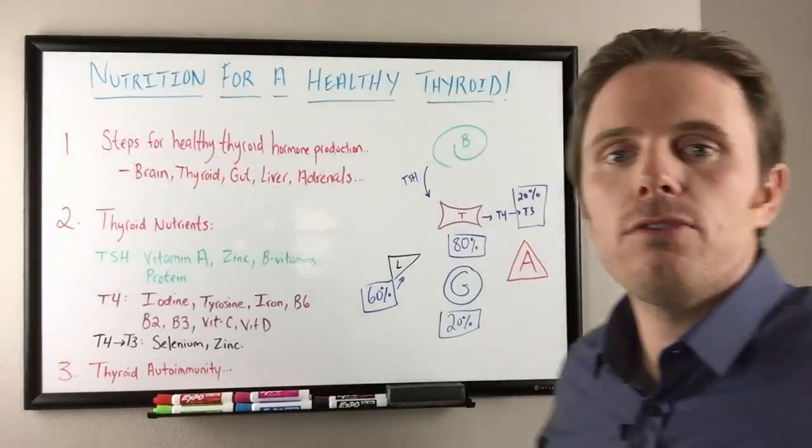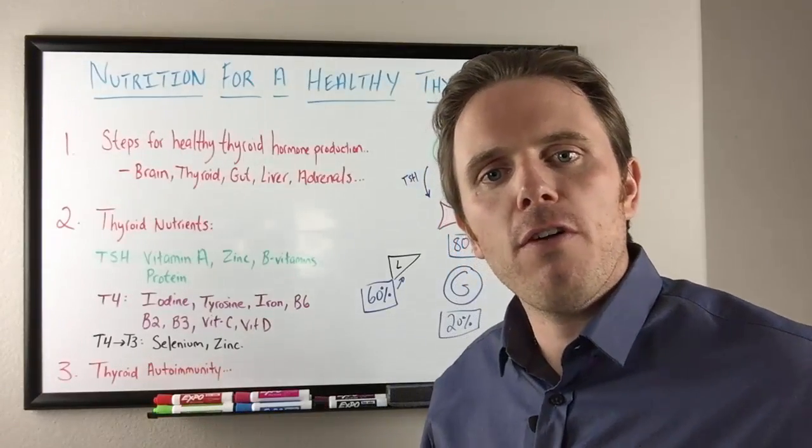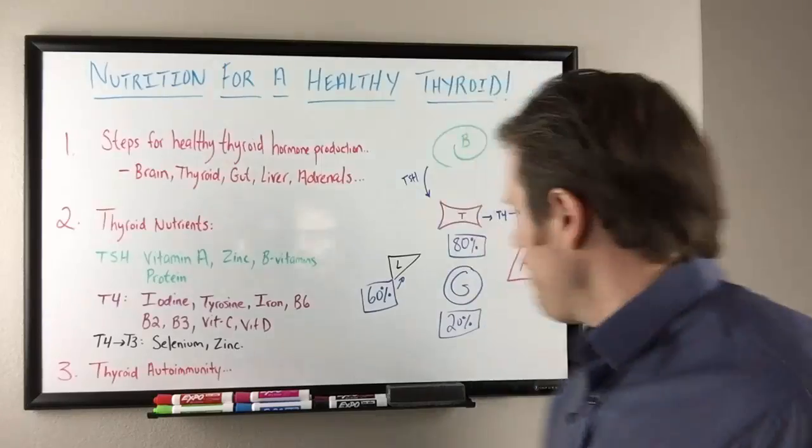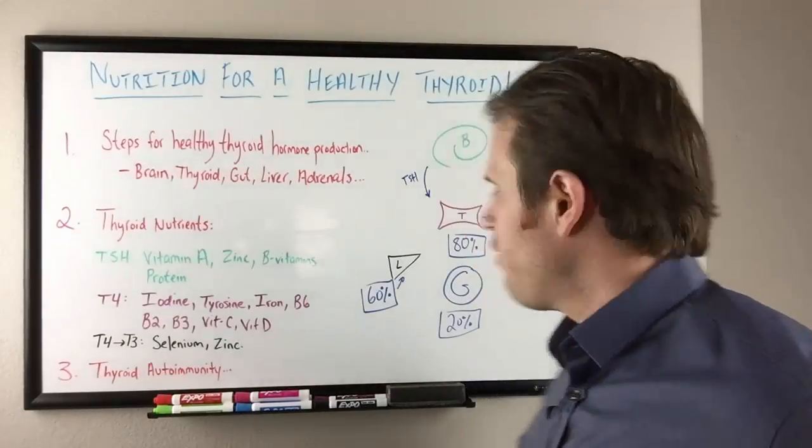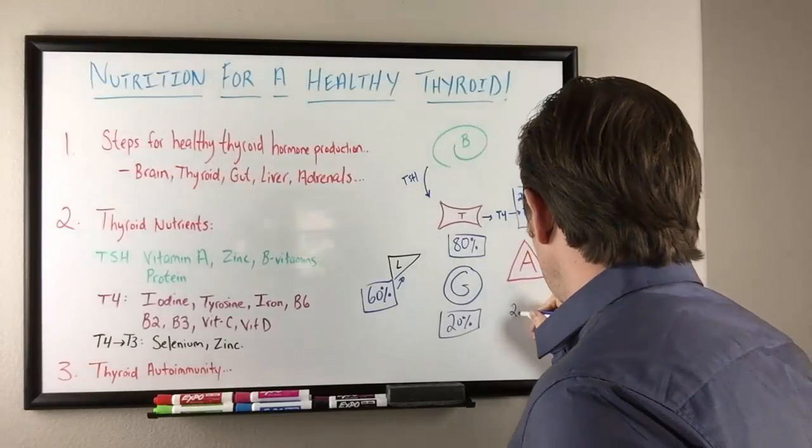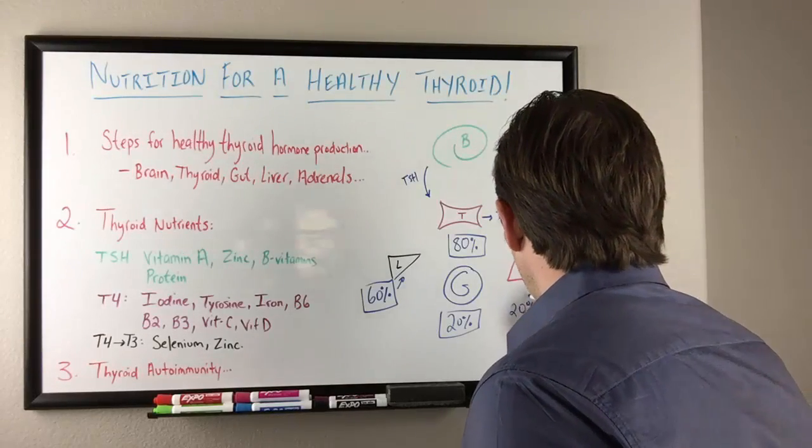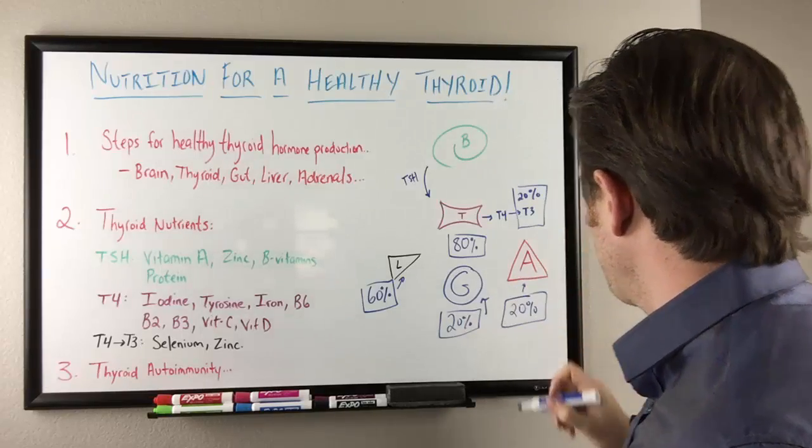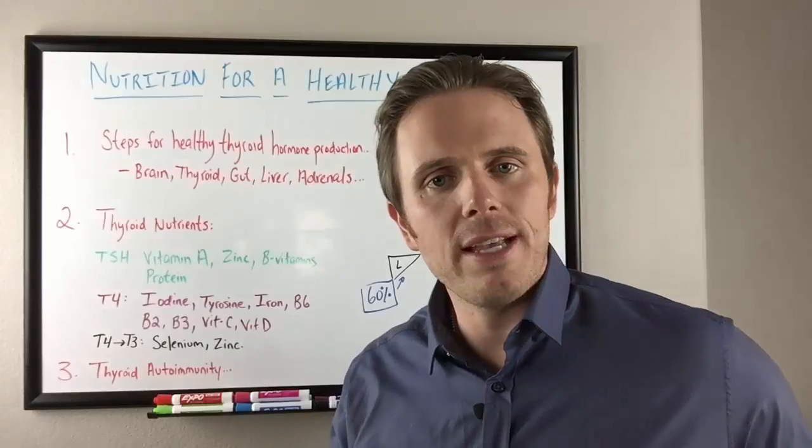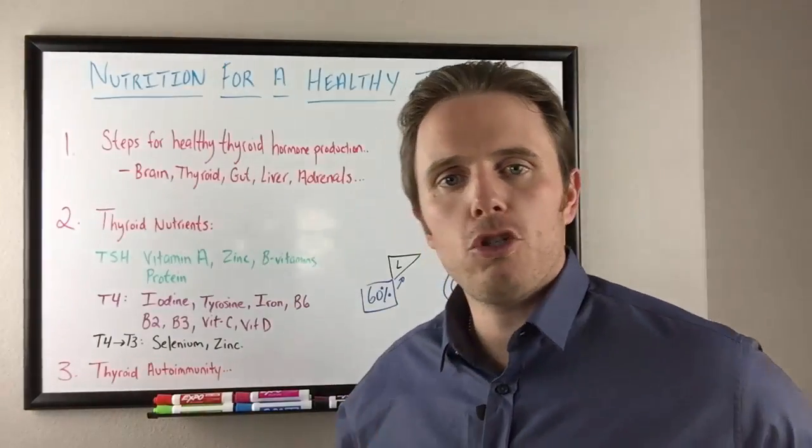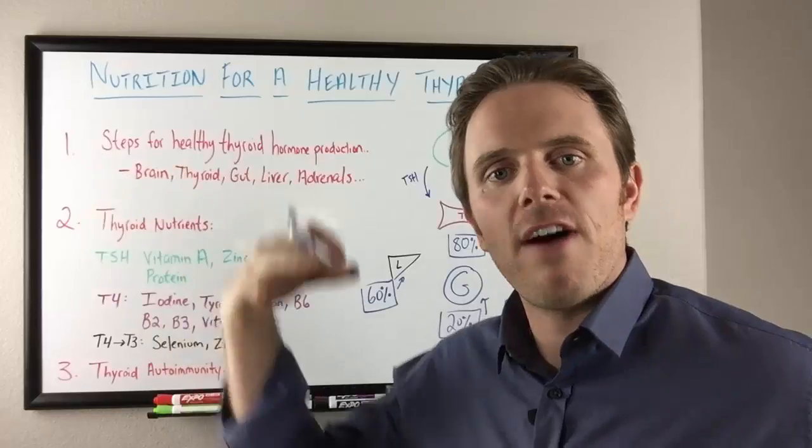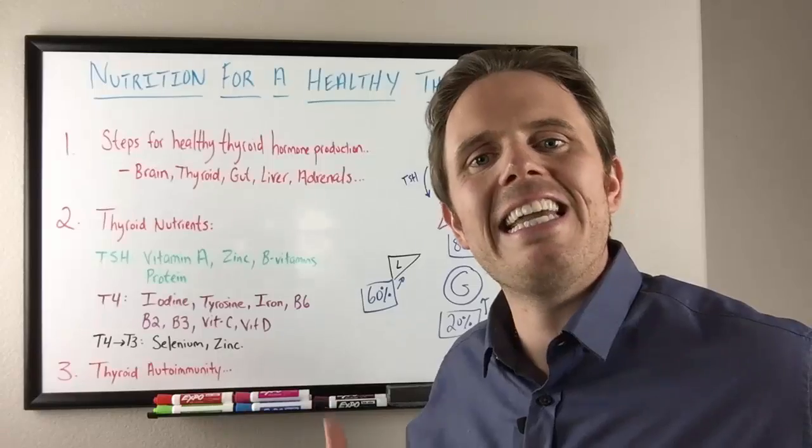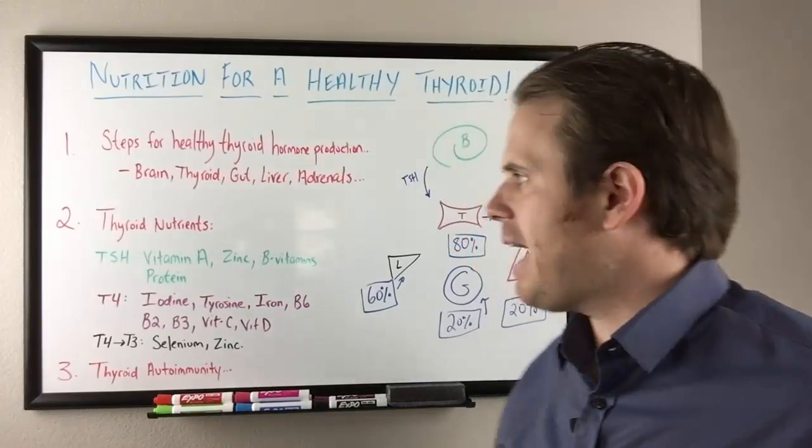Next is the adrenal glands. The adrenals are very important for activation of thyroid hormone. Mainly because if we're under adrenal stress, that can increase our reverse T3 levels. I count the adrenals as being a 20% contributor of activating thyroid hormone. If the body's under too much stress, if cortisol is too high, we'll have more reverse T3s. And reverse T3 is inactive T3.